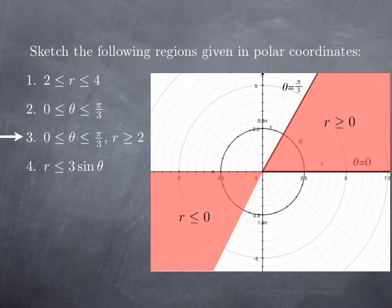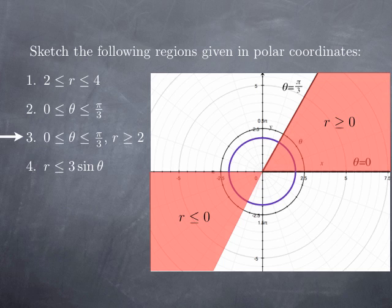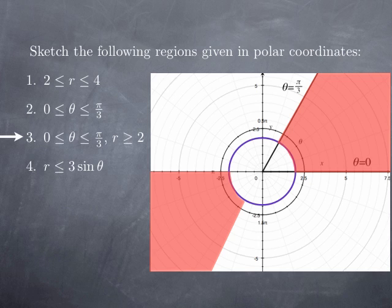If we add the condition that r≥2, we look at the circle r=2. Since r≥2 means the distance to the origin is at least 2, we keep only what is outside the disk, including the boundary circle. So we obtain this region.